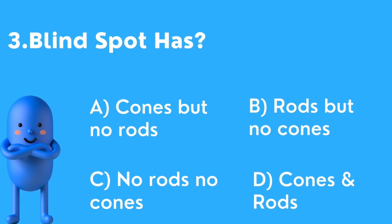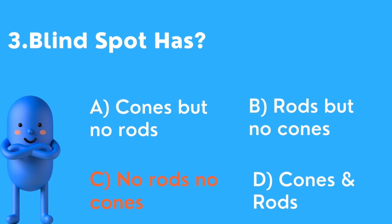Third question: Blind spot has — options include cones only, no rods, rods only, no cones, no rods and no cones, and cones and rods. The answer is no rods and no cones — the blind spot has neither rods nor cones.